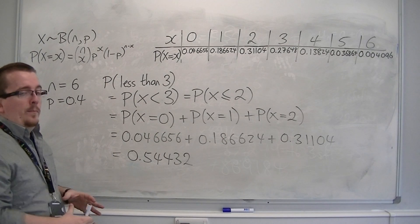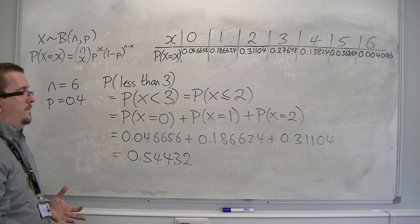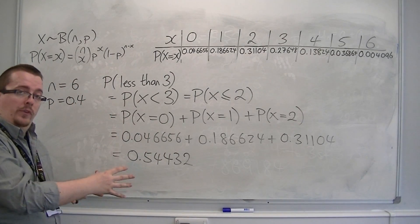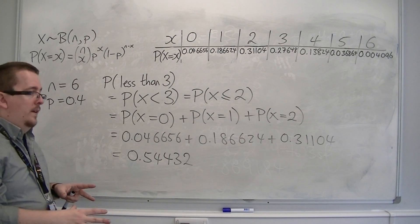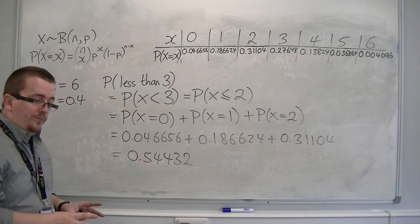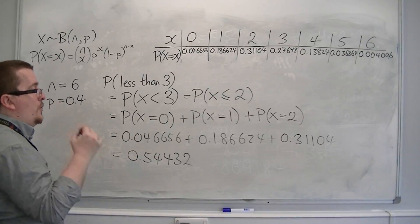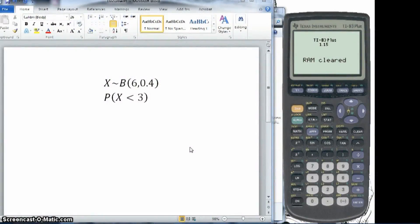I would like there to be a much easier way to do it. We can do it using either the tables in the formula booklet, or I'm going to show you the way to do it on the TI-82 stats very quickly. In this example we've been looking at a binomial distribution with number of trials 6 and a probability of 0.4, and we want to find the cumulative probability of x being less than 3.